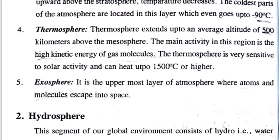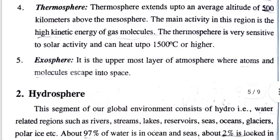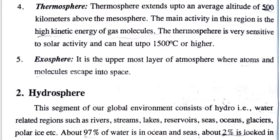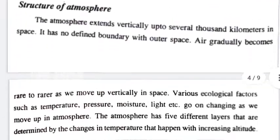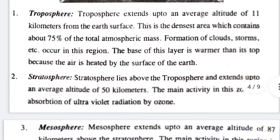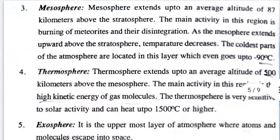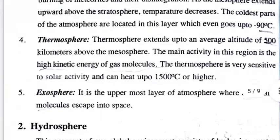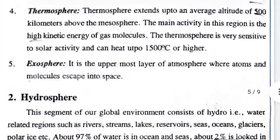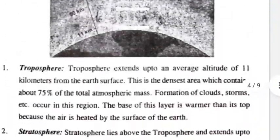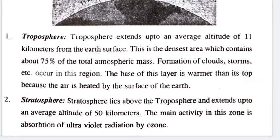The last layer is the exosphere, which is the uppermost layer. At this point, atoms and molecules can escape into space. To recap: the first layer is the troposphere, second is the stratosphere, third is the mesosphere, fourth is the thermosphere, and the final layer is the exosphere.